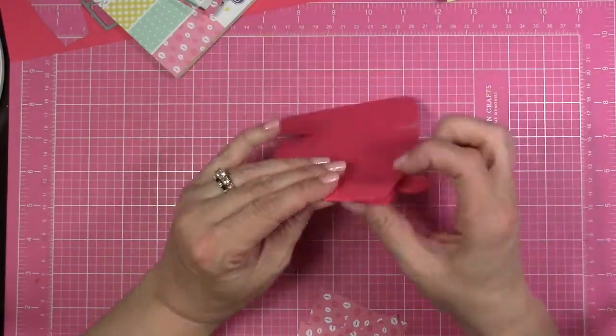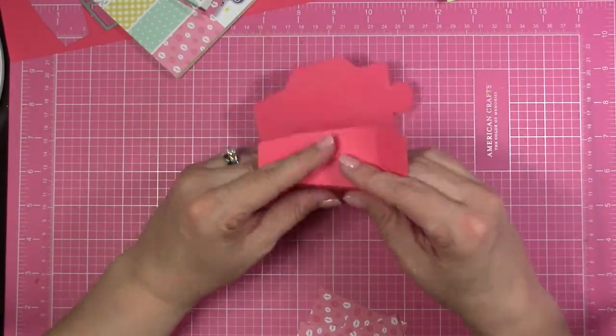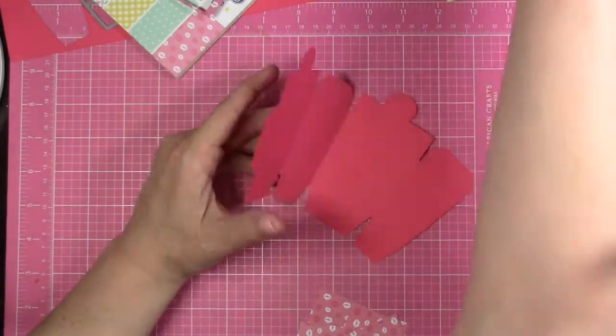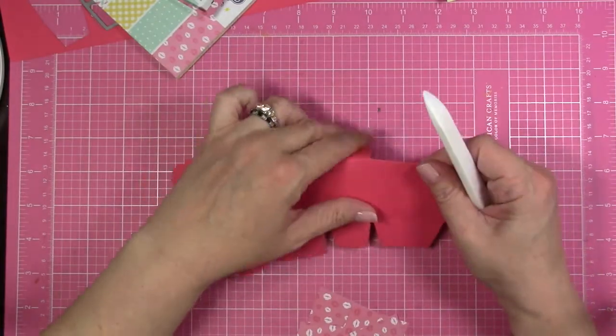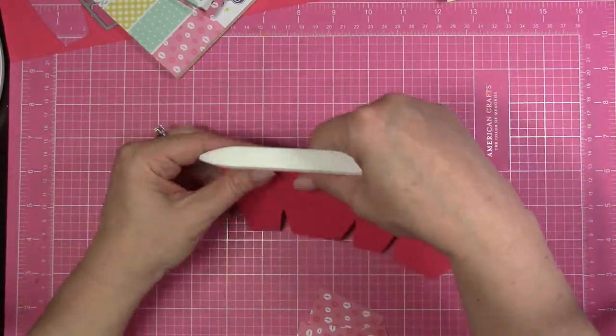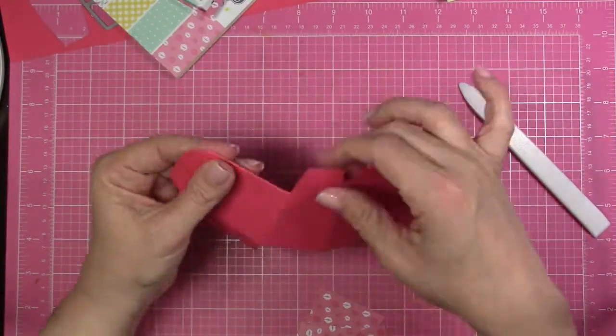Now the first thing you want to do is you want to score your box to make sure everything works where it should. The score lines that this gives is pretty good. You really don't need your bone folder, but you can crease anything up nice and firm if you want.